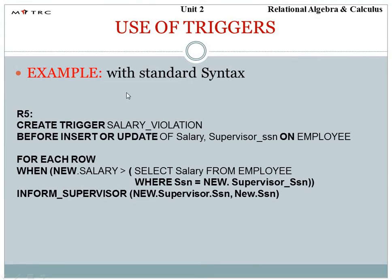Now if we look at the use of trigger with standard syntax — create trigger salary violation — we define a salary condition. The trigger fires before or after an event, for example when the salary data is updated. After the new value is set, the trigger is activated. We define it for each row. For example, checking the new salary by selecting from salary and employee, defined by the new supervisor's social security number.